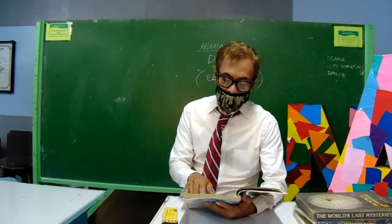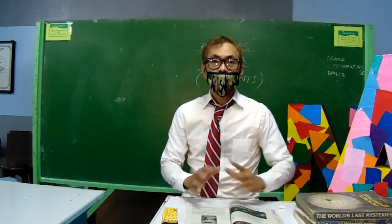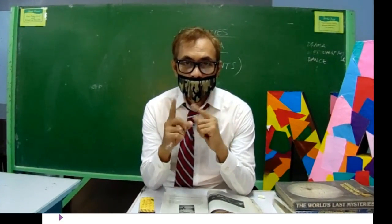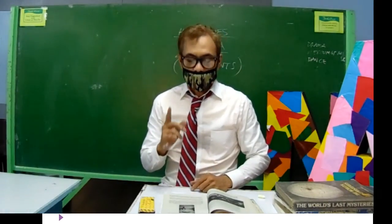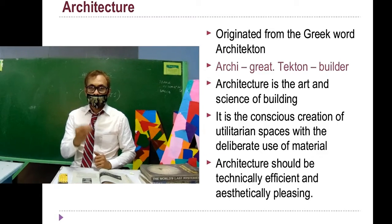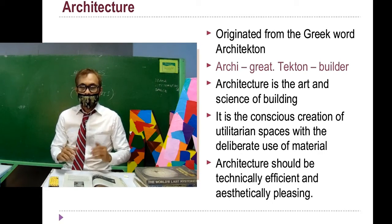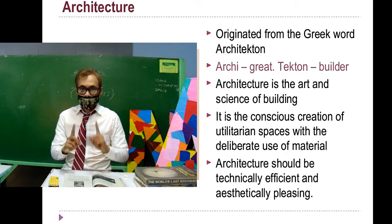Good morning ladies and gentlemen. Our subject is Theory 1, which is about composition and influencing factors in architecture. It is the subject where you can learn how to compose forms from natural shapes, geometric shapes, and even abstract shapes. First, let us define architecture.